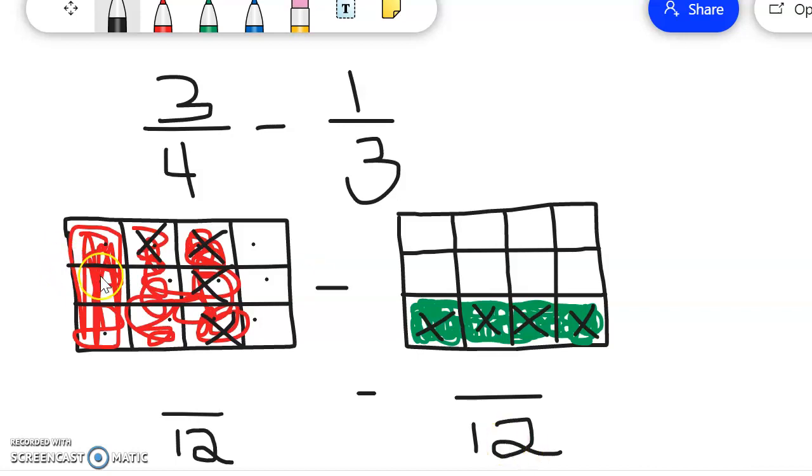So now I'm going to count the total number of shaded parts - three, six, nine. And then over here I have one, two, three, four. And then I'm going to subtract. Nine subtract four is five. Denominator is 12.